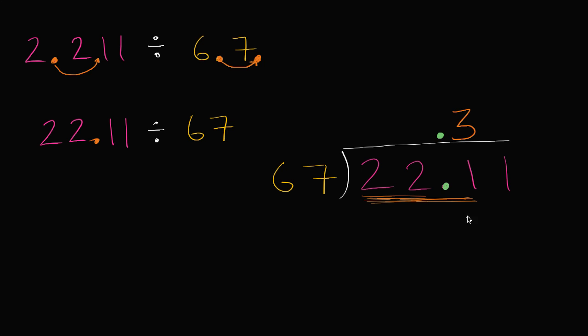3 times 7 is 21. Carry the 2. 3 times 6 is 18, plus 2 is 20. So we get 201. And the difference between 221 and 201 is going to be, well, you just get a 0 here, you get a 2 here, then you get a 0 here. I don't have to write it. It's 20.